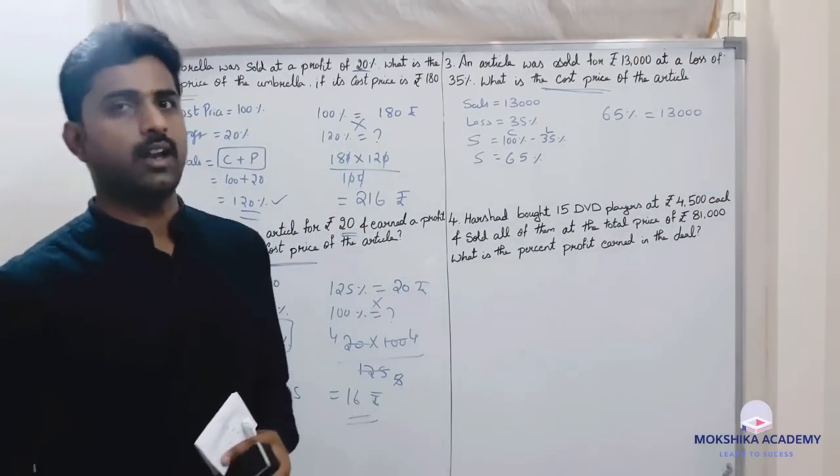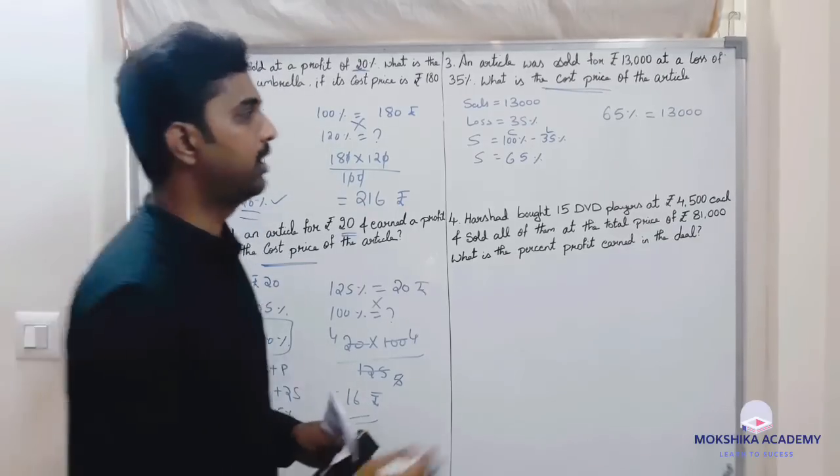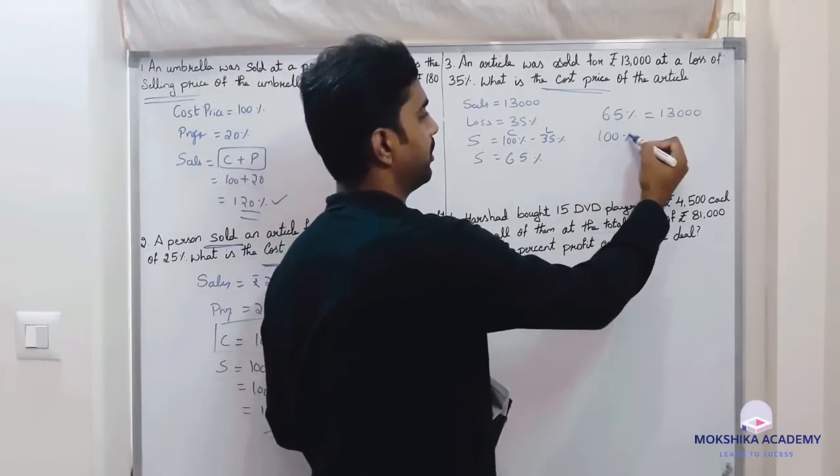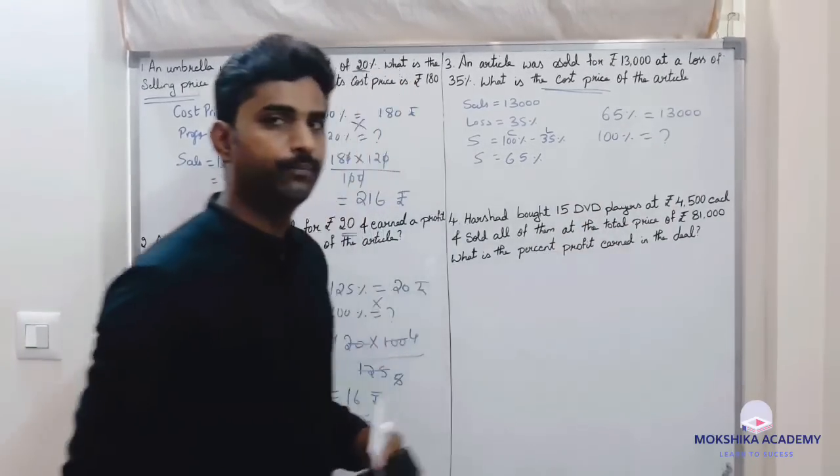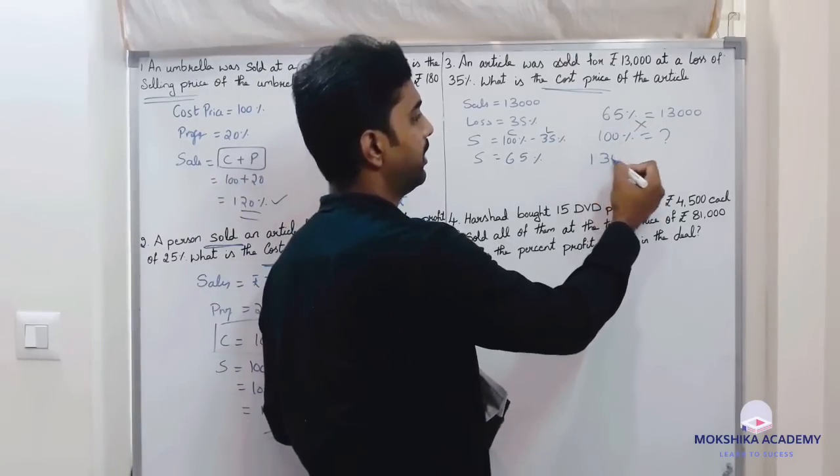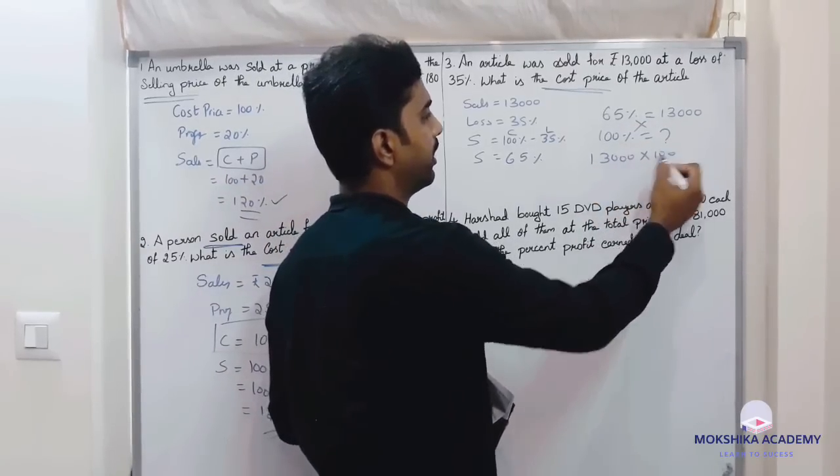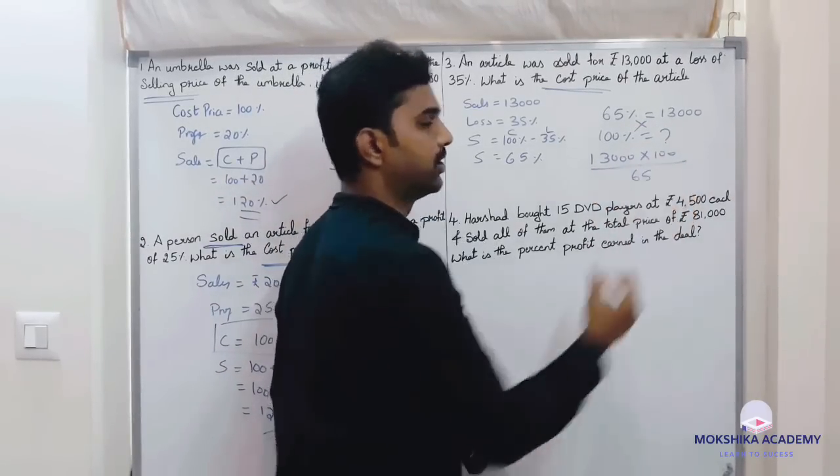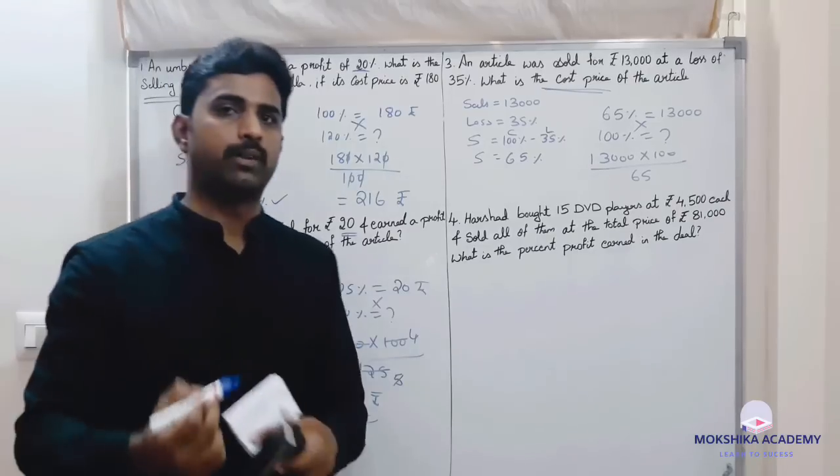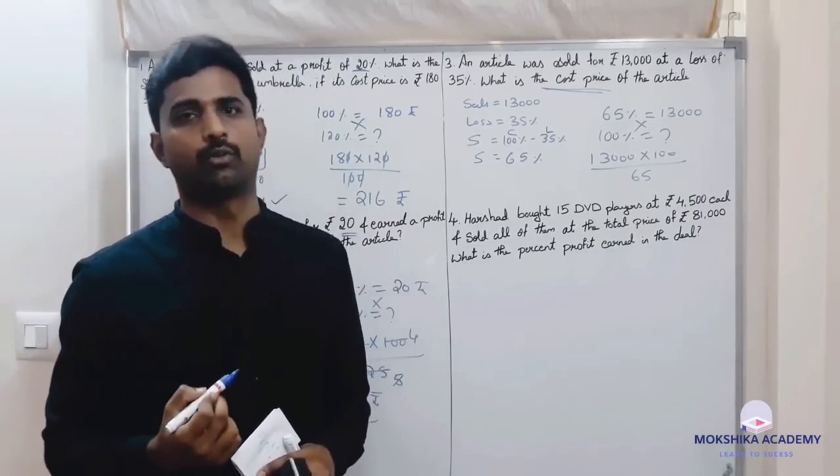So cost is 100 percent. 100 percent is equal to question mark. Cross multiply: 13,000 into 100 divided by 65.